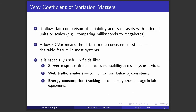So why does the coefficient of variation matter? It allows fair comparison of variability across data sets with different units or scales. For example, you may be comparing milliseconds to megabytes. You are able to see the variability within these different data sets using the coefficient of variation. A lower coefficient of variation means the data is more consistent or stable — a desirable feature in most systems.